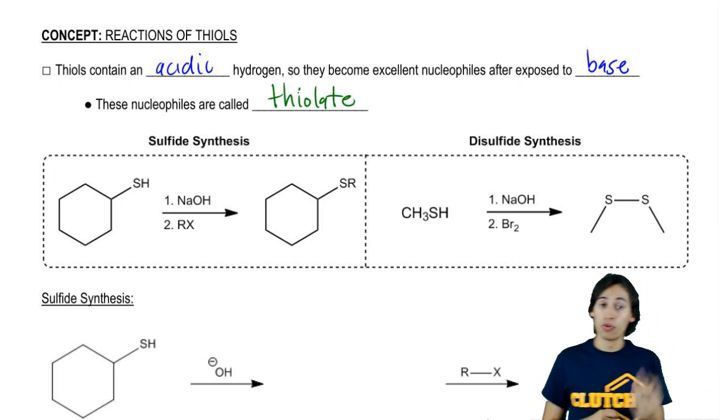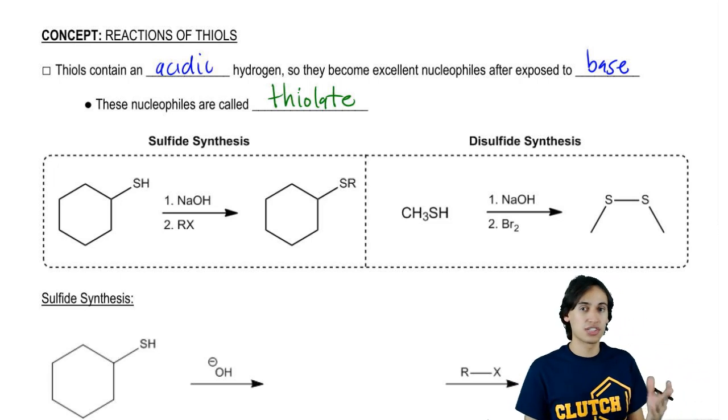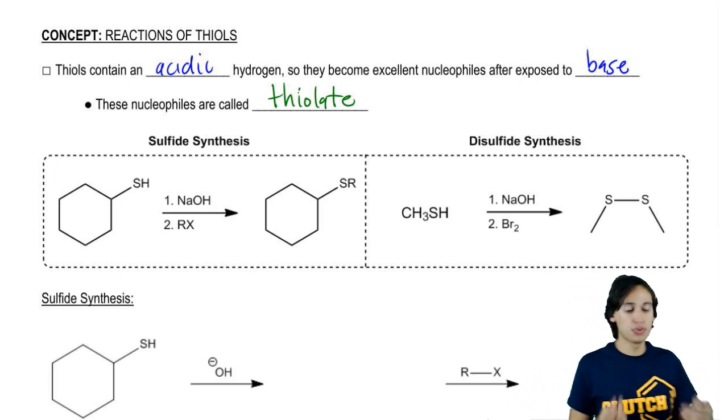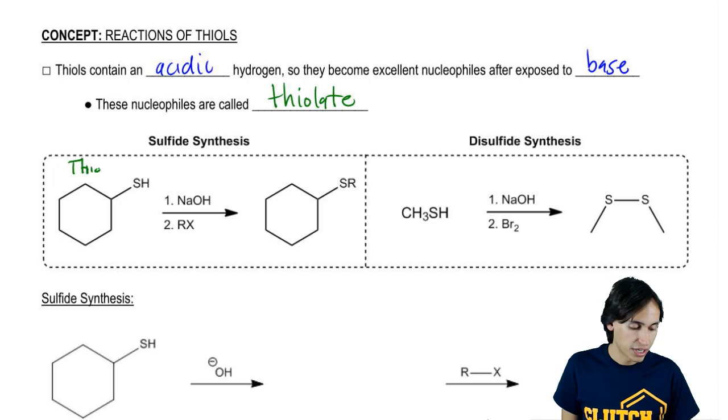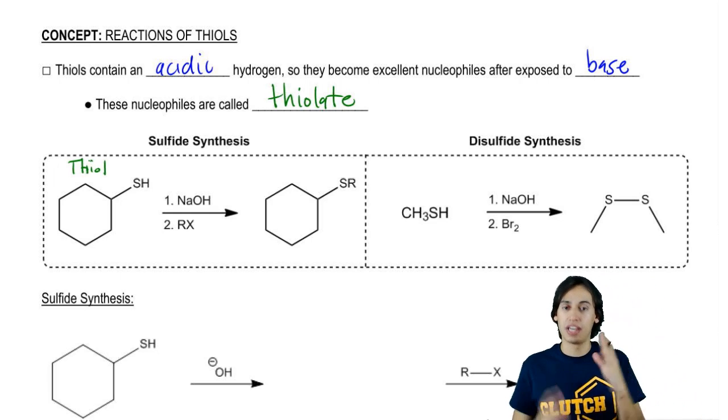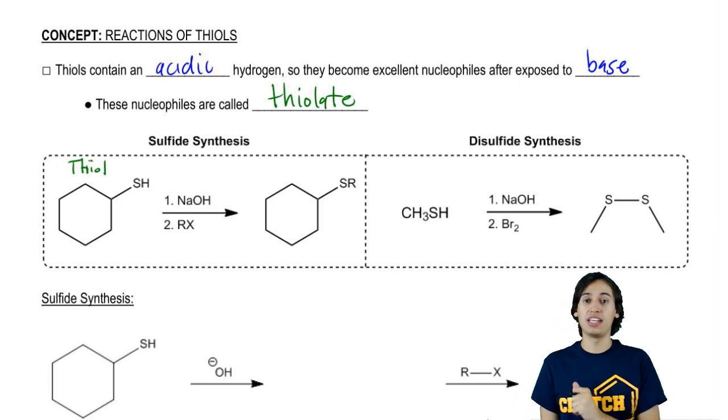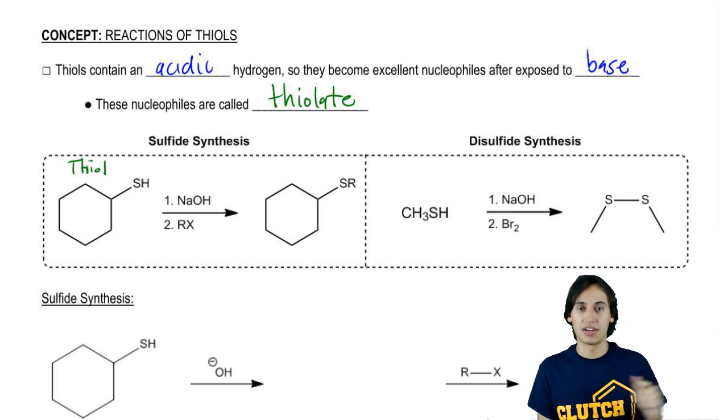So we can do sulfide synthesis through a thiol and we can also do disulfide synthesis. Let's start off with the easier one, which is sulfide synthesis. So in sulfide synthesis, I start off with my thiol. That looks just like an alcohol except it's got the S. And I react it with base. The base is going to deprotonate the H and make my thiolate anion.